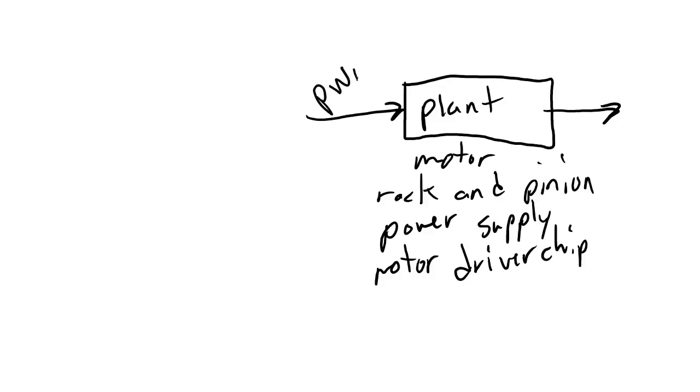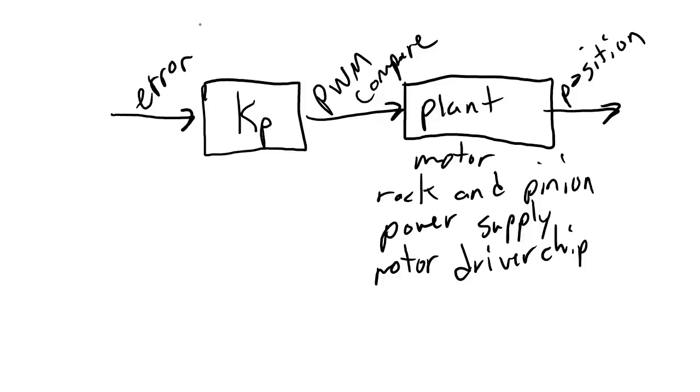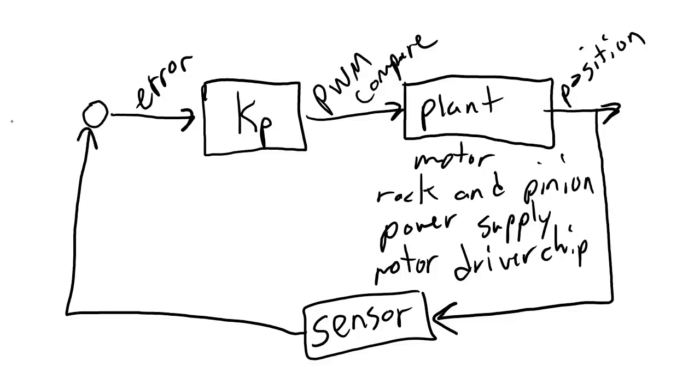The input to this plant is the PWM compare value and the output is the position of the rack. Now the PWM compare value comes from this other block which I'm going to label Kp. In our Psoc control code we have an equation that takes in the error in the position, multiplies that error by Kp, and that product becomes the compare value. We then read the position from our encoder, which I'll just label here as sensor, and that position feeds back here and I'll draw a little circle and then give an input, this is our target position.